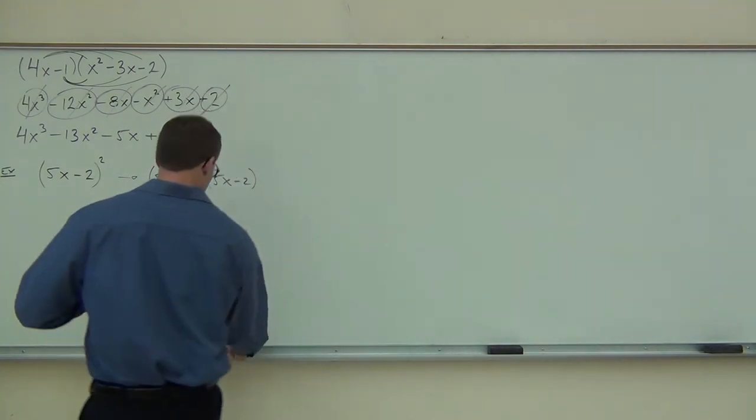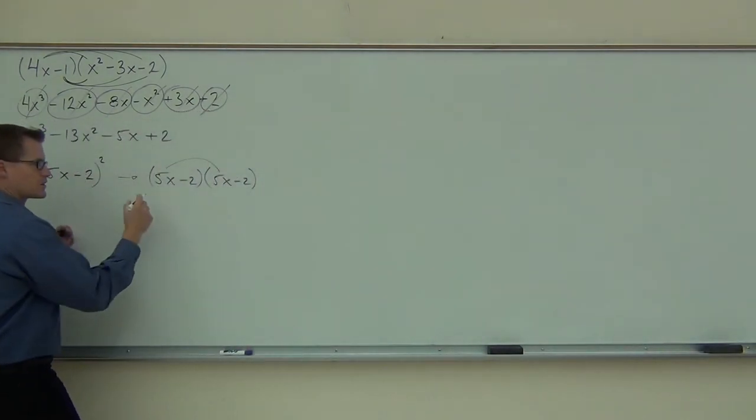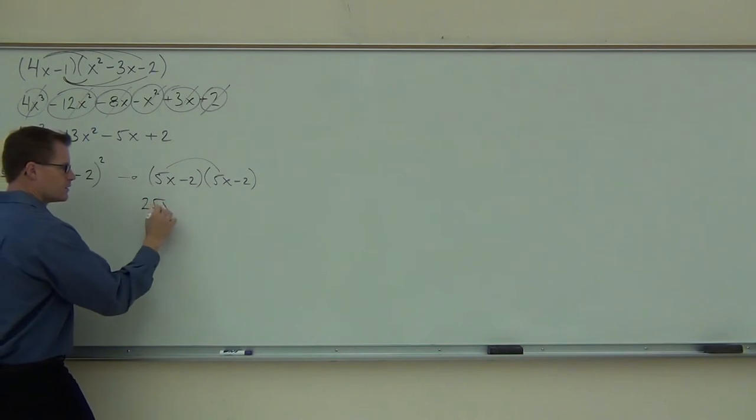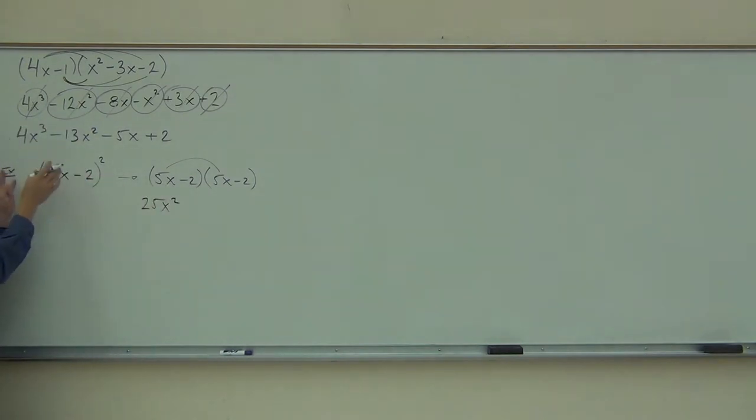Okay. So we are distributing, here the foil does work just fine. We're going to get the 25x². That part would be the same as if you just squared this one.